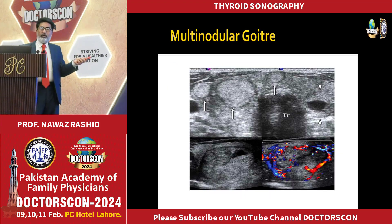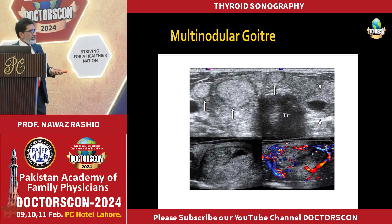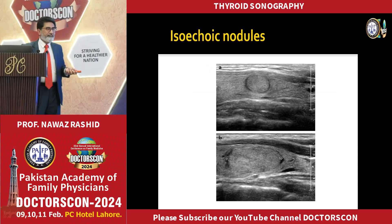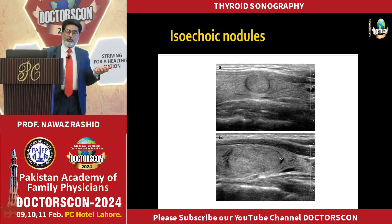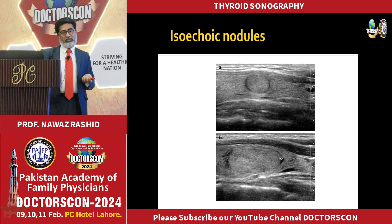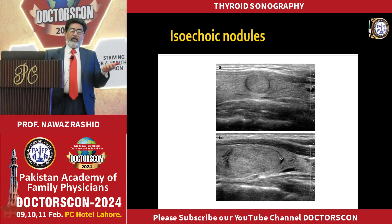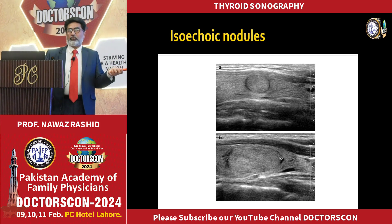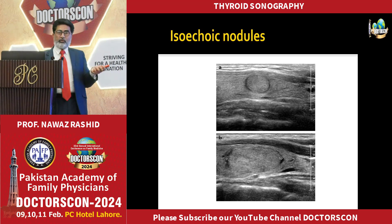This is a multinodular goiter with multiple nodules that are hyperechoic with a surrounding thin halo. Look at the peripheral blood flow. The echogenicity of these nodules is similar to the surrounding normal thyroid, making it difficult to differentiate. The surrounding hypoechoic halo is due to edema.